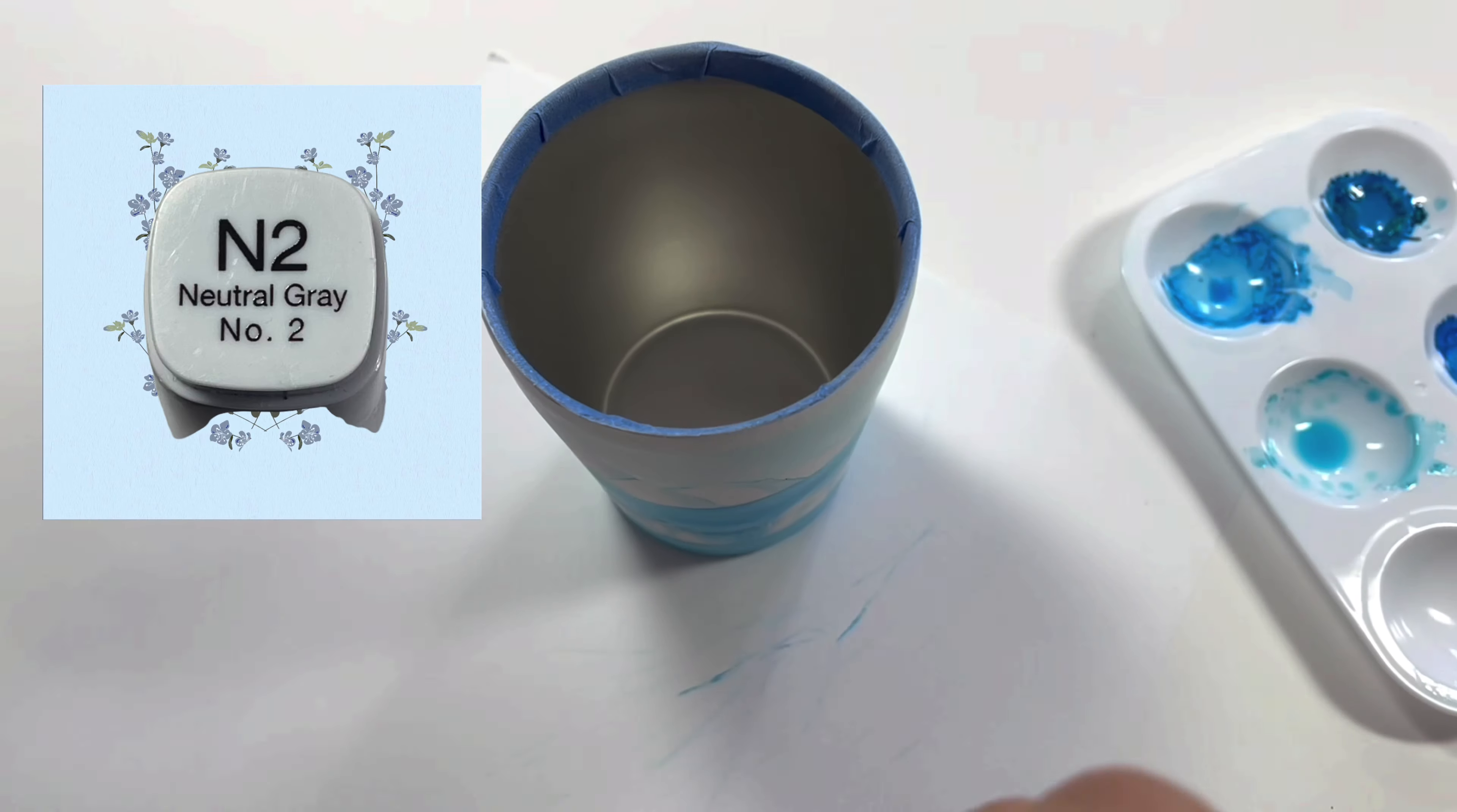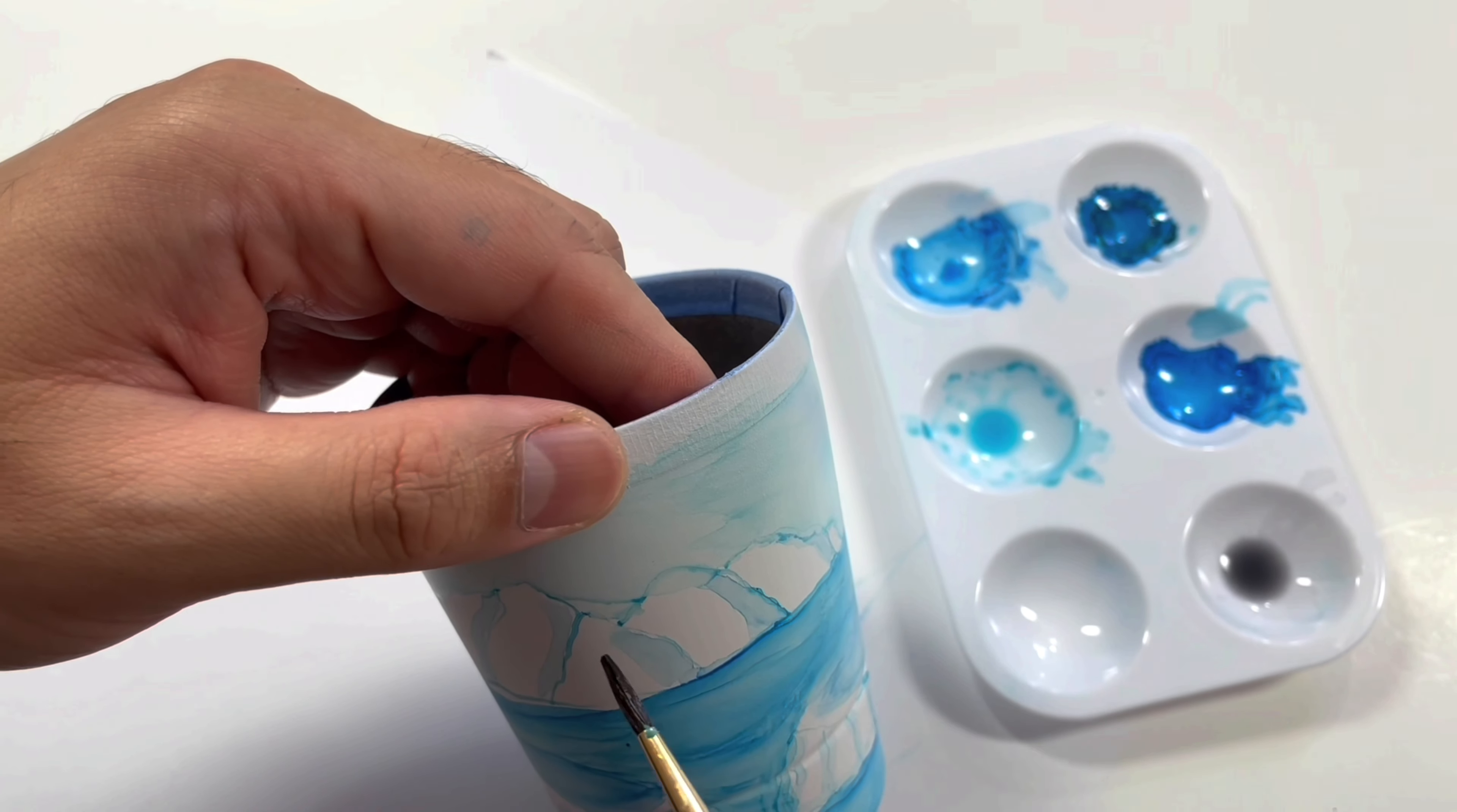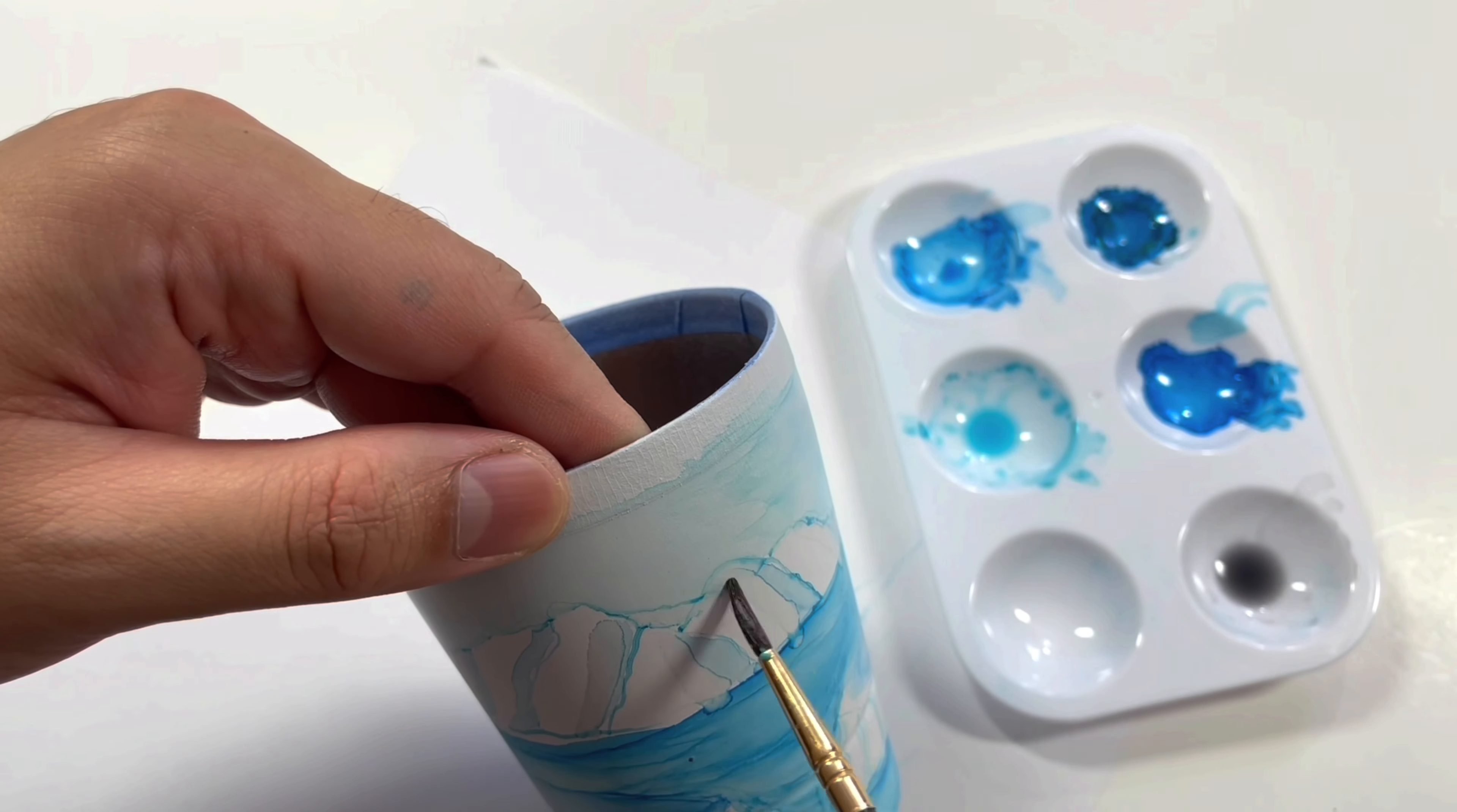The last color I am using here is natural gray and two shade number. This gives a little gray shade to the ice and makes them look more natural.